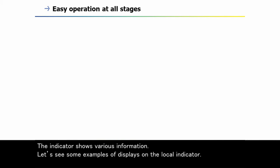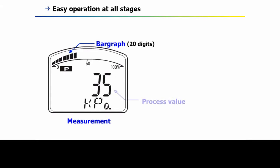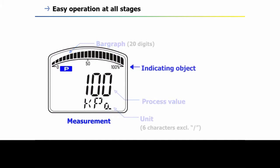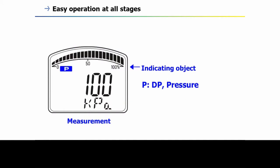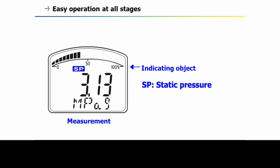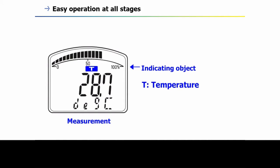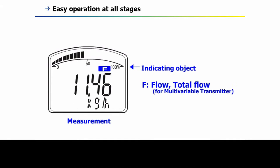The indicator shows various information. Here are some examples of displays on the local indicator: bar graph, process value, and unit. Variable labels include P for pressure, SP for static pressure, T for temperature, and F for flow.